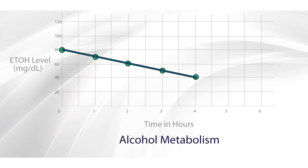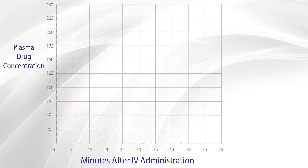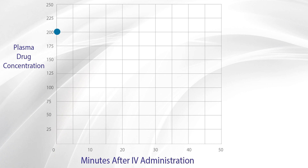So what's the difference between the two? Let's say we administer a bolus dose of a drug intravenously. We draw a blood sample shortly after we administer it and find that the plasma concentration of the drug is 200 micrograms per milliliter. We then keep drawing blood samples and notice that after 10 minutes, the plasma concentration has dropped to 100 micrograms per milliliter.